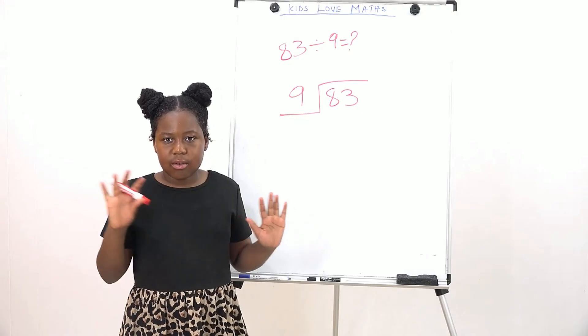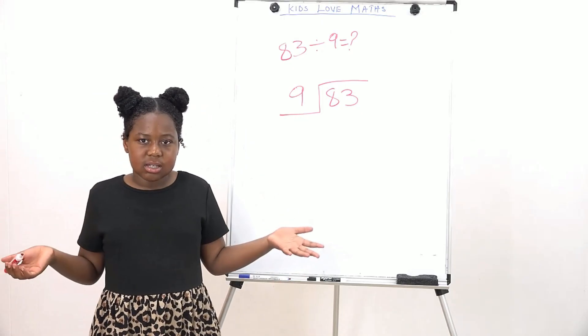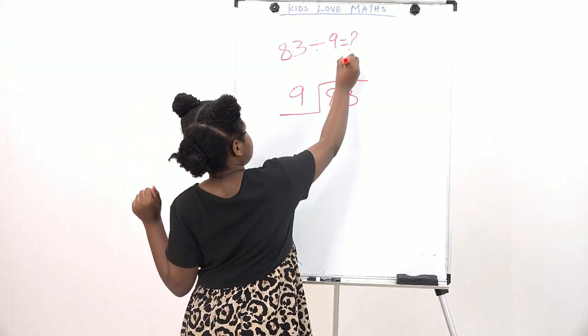Well, 81 is only 2 away from 83, so I think we'll stick with 9 times 9. Well, what's 9 times 9? That is 81. So we're going to put 9 up here.